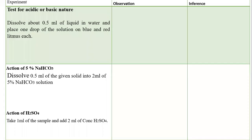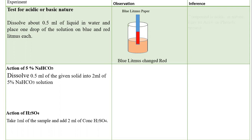After this, we will test its acidic and basic nature using litmus paper. We take the sample and dip blue litmus paper into it — the blue litmus turns red. So it can be an acidic compound: acids, phenols, or anything acidic.